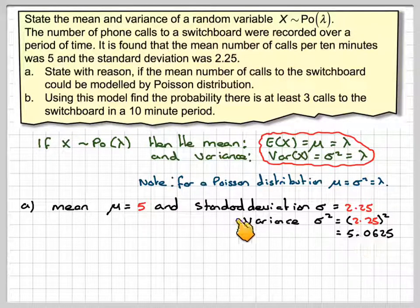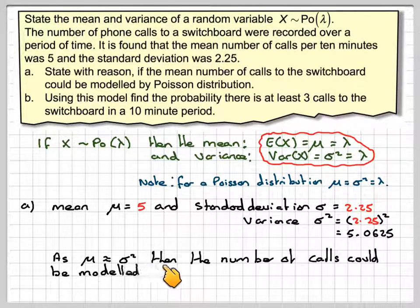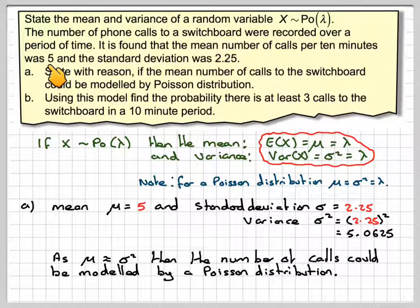Now we know that that is fairly close to the mean. Therefore, as the mean is approximately equal to the variance, not quite but approximately equal, then the number of calls could be modeled by a Poisson distribution mean of 5.